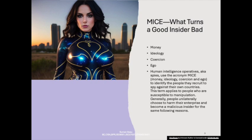Coercion is essentially blackmail. A person may be compromised because of a situation that could cause embarrassment or other harm. For example, when someone gives a spy compromising information, the spy can use that information as a threat — saying 'unless you continue to give me more information, I will disclose that you gave me this information in the first place' — making the target vulnerable. Ego refers to a person becoming a malicious insider due to perceived unfair treatment, such as not getting a promotion or sufficient advancement in their career.